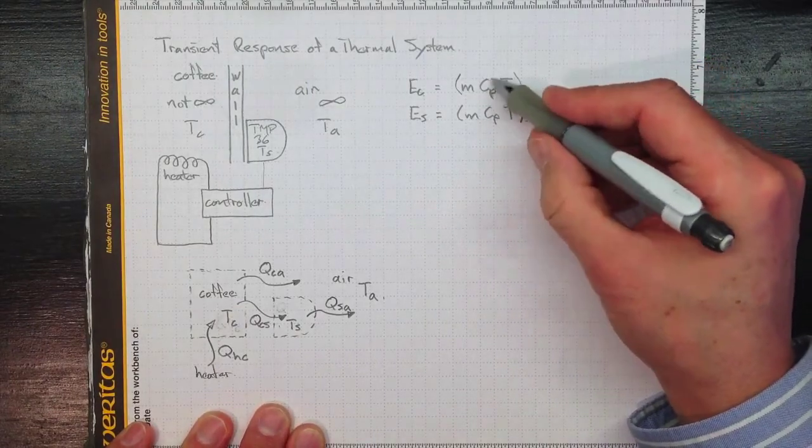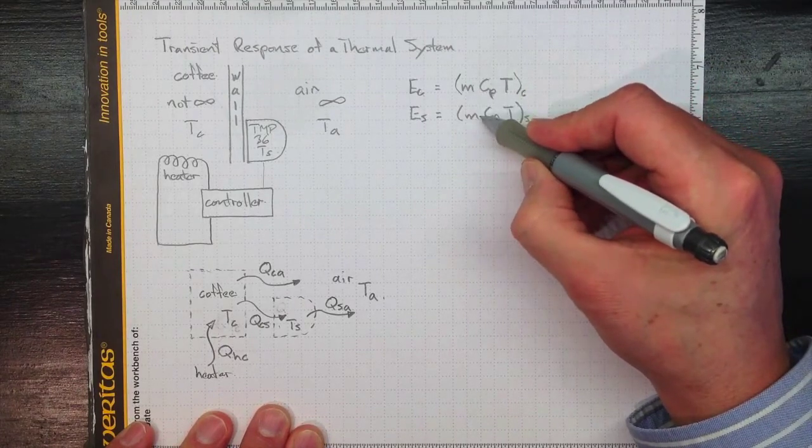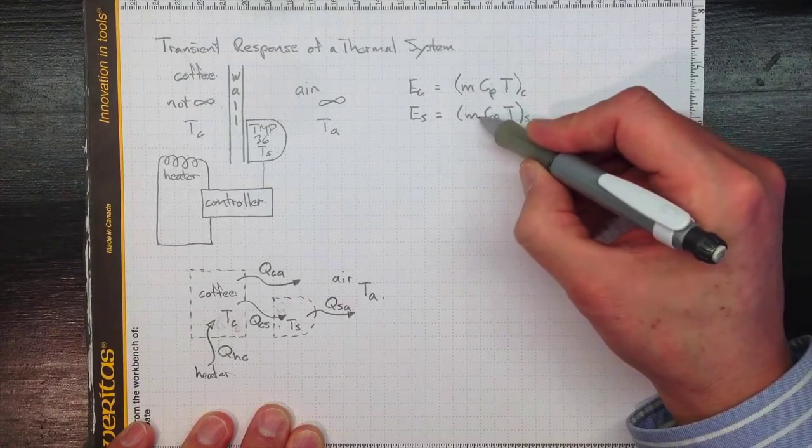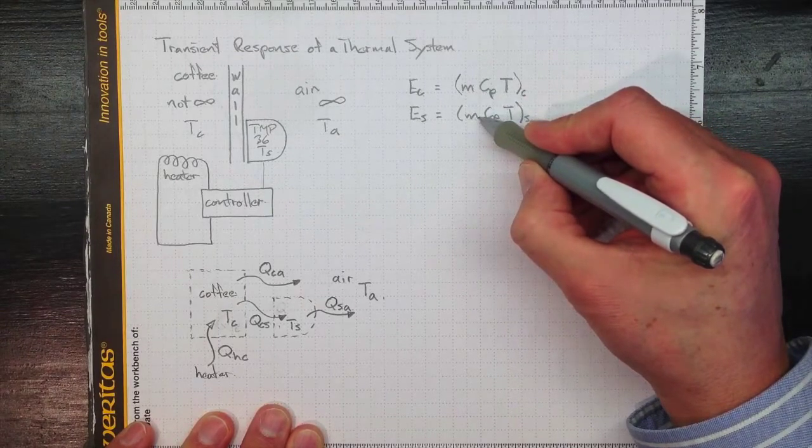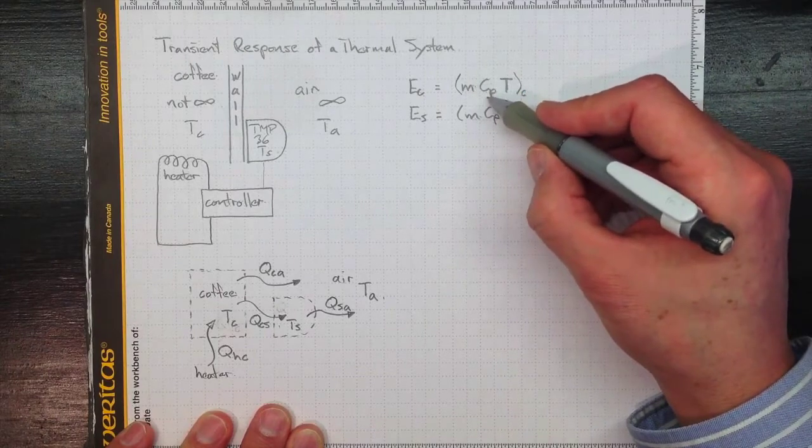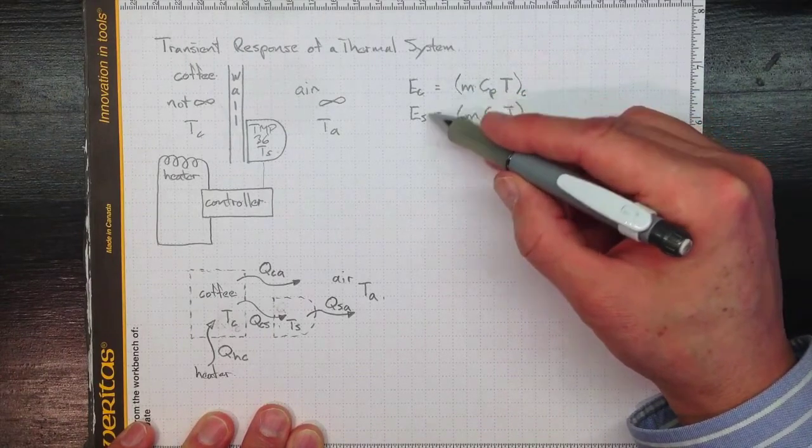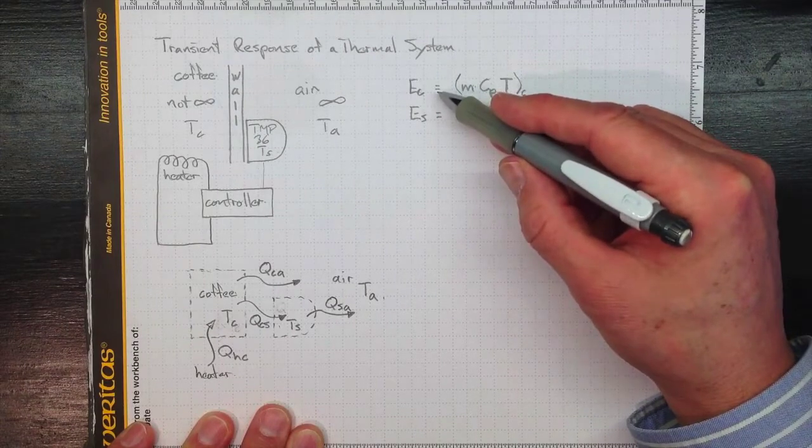Now the specific heats will be similar, the temperatures are similar, and the masses are way different. The sensor is way smaller than the coffee. So I expect that the energy contained in the sensor is going to be way smaller than the energy contained in the coffee. And I expect the sensor is going to respond more quickly than the coffee to our transient response.